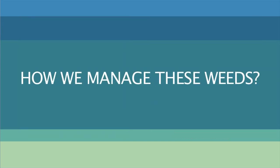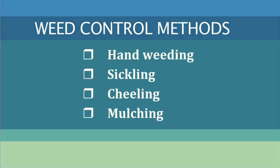Now, coming to the control methods — that is, how we will manage these weeds. There are various control methods. Among those, the mechanical methods include hand weeding, sickling, chilling, forking, and mulching, which are generally done for weed control in tea plantations.